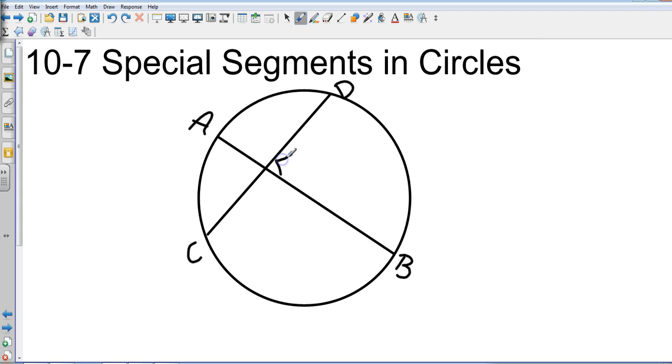So the rule for this one is if you have two chords and they intersect, then the product of the small section times the larger section is equal to the product of the small section of the other one times the large section. So here's what it looks like: AE times EB will be equal to CE times ED.